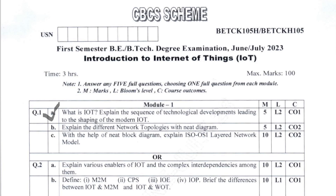The second question is: Explain the different network topologies. You would have learned about bus topology, ring topology, and star topology. You will be drawing diagrams and explaining what each topology refers to. Then, with the help of a neat block diagram, explain the ISO OSI layered network model. You know that the OSI model is a 7-layer model — you will draw the block diagram and explain each layer, which carries a total of 10 marks.